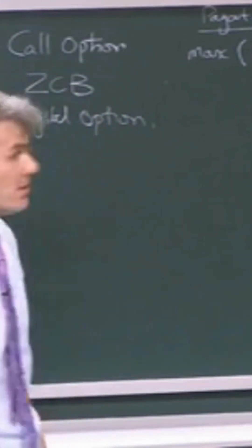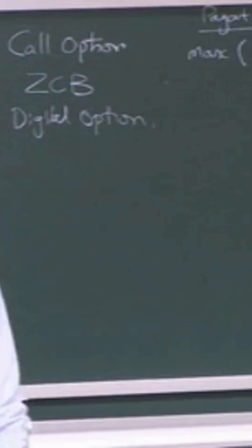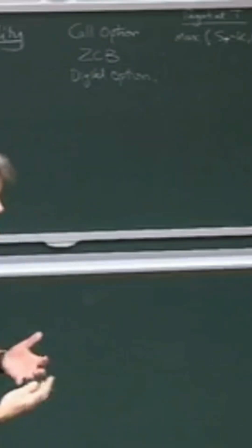That's the call option. You can go through the right to buy, et cetera, et cetera. But clearly, its value at maturity is just the max of S,T minus K and 0.